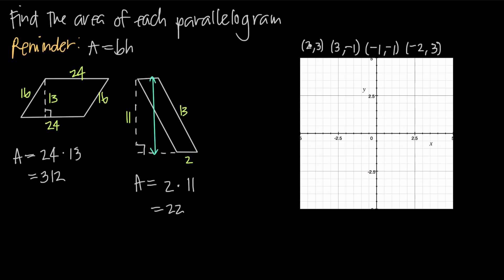We can also be given a parallelogram by its four vertices, and sometimes we need to find its area. The easiest way is to graph each of the four points. We graph (2, 3), then (3, -1), then (-1, -1), then (-2, 3). Connecting those four points gives us a parallelogram where the base is along the bottom and the height is the internal vertical height — not the slant height.